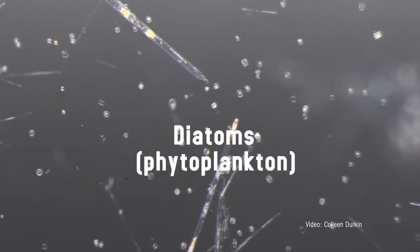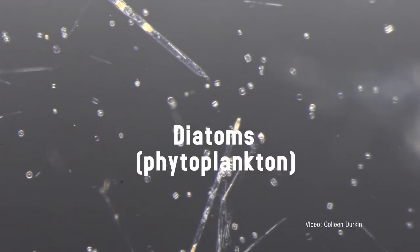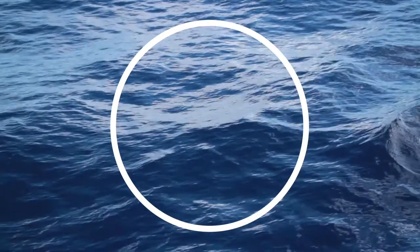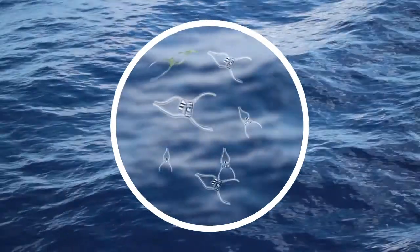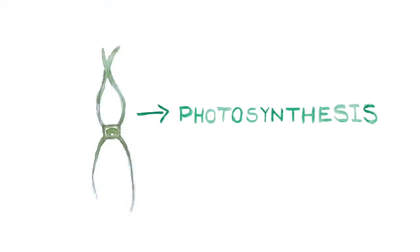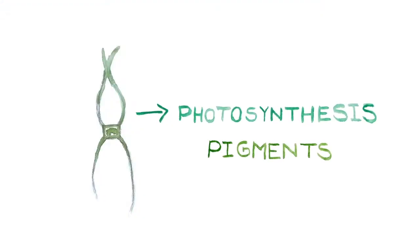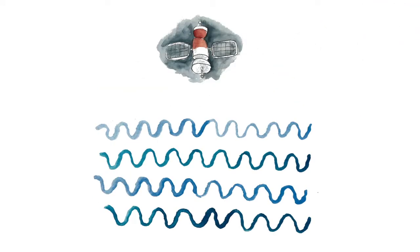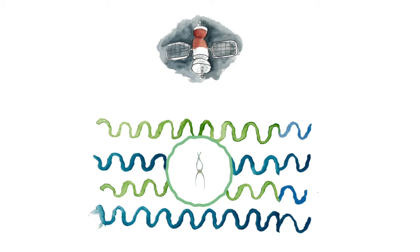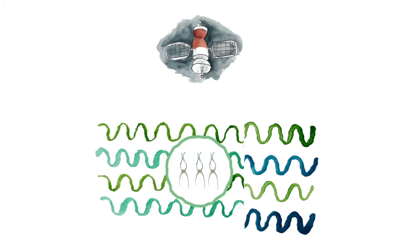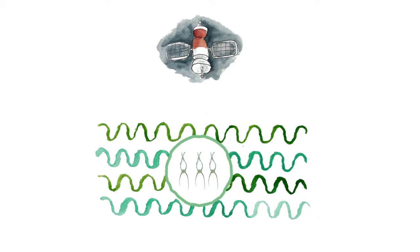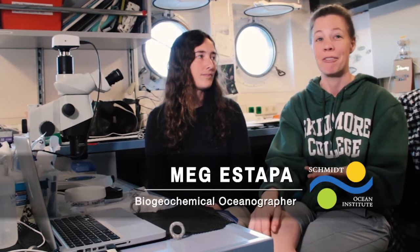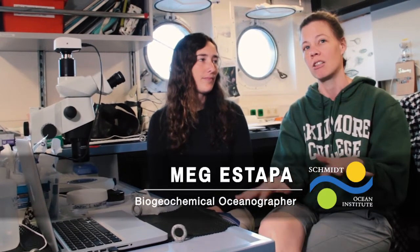Plankton includes all the organisms that cannot move actively through the water column — they are dispersed in the water column and passively moving with the currents. Phytoplankton are specifically the plankton that photosynthesize, and to do that they have pigments. That same pigmentation seen from space is what gives ocean water its color, and we can tell how much phytoplankton is there, and hopefully someday we'll be able to tell what kind of phytoplankton just based on the color of the water.